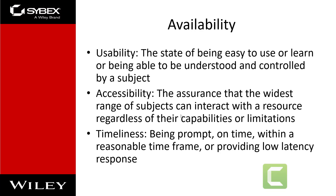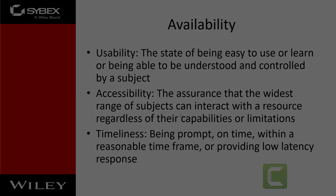Numerous countermeasures can ensure availability against possible threats. These include designing intermediary delivery systems properly, using access controls effectively, monitoring performance and network traffic, using firewalls and routers to prevent denial-of-service attacks, implementing redundancy for critical systems, and maintaining and testing backup systems. Most security policies and business continuity planning focus on fault-tolerance features at the levels of disk, server, or site, with the goal of eliminating single points of failure. Availability depends on integrity and confidentiality. Other availability concepts include usability, accessibility, and timeliness — meaning being prompt and providing low-latency response.